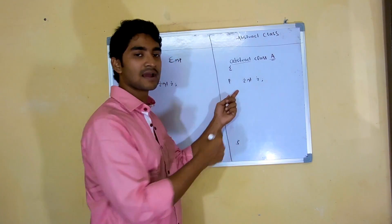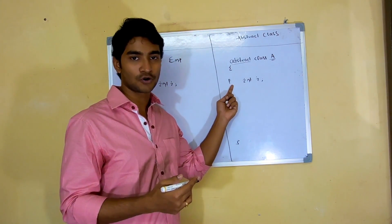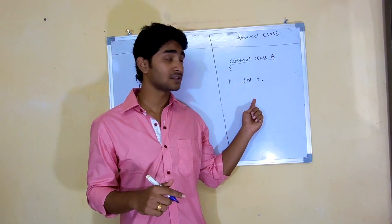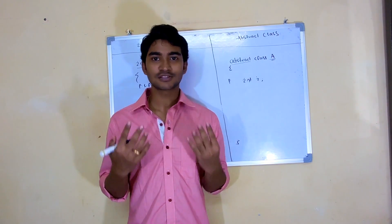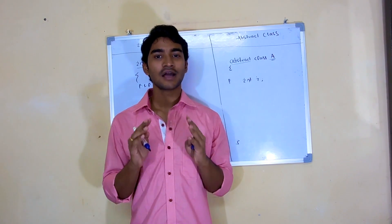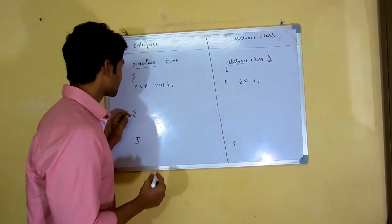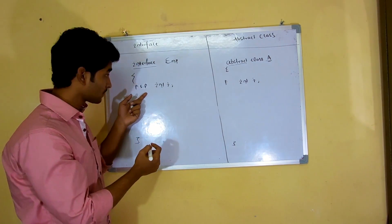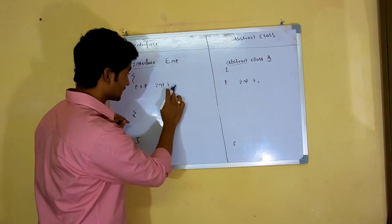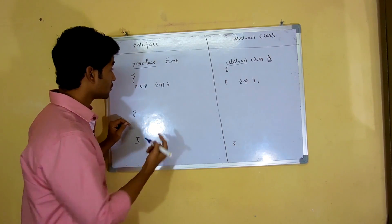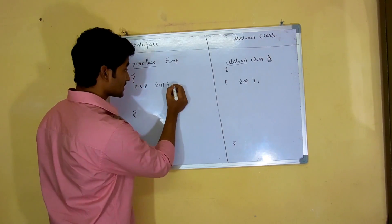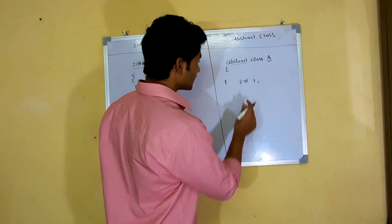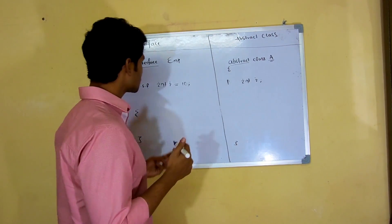You can make an abstract class variable public, private, or any valid modifier. So the variables inside the interface are public, static, and final, while the variables inside the abstract class can be anything. Also, because interface variables are final, you must initialize them — so if I declare 'int i' in an interface, I should assign it a value like 10. Initialization is compulsory for interface variables. But for abstract class variables, you may or may not initialize them — it's up to you.